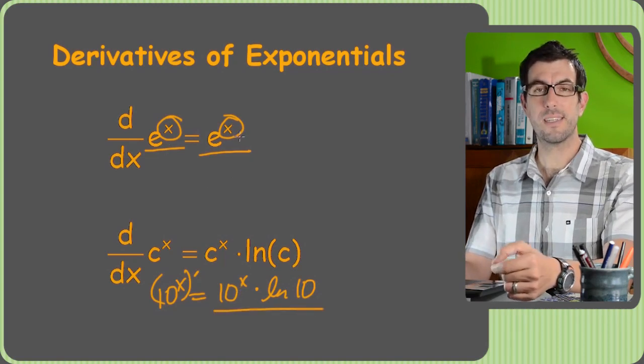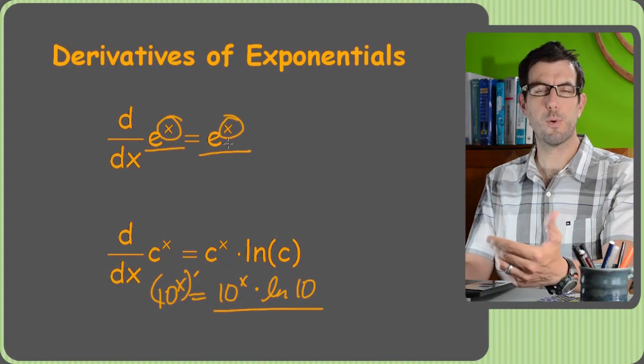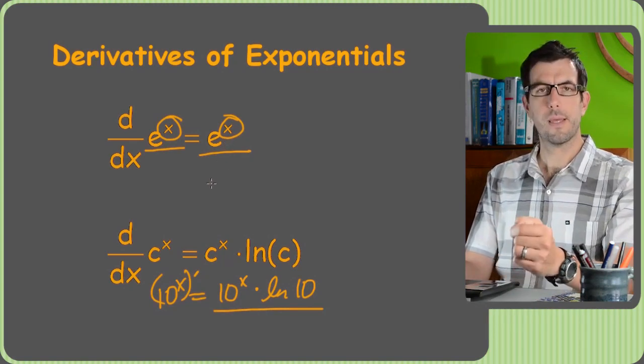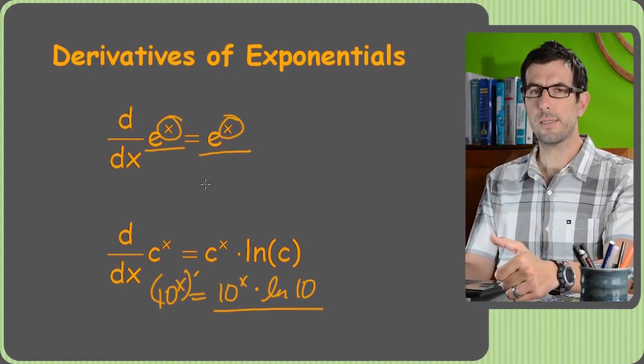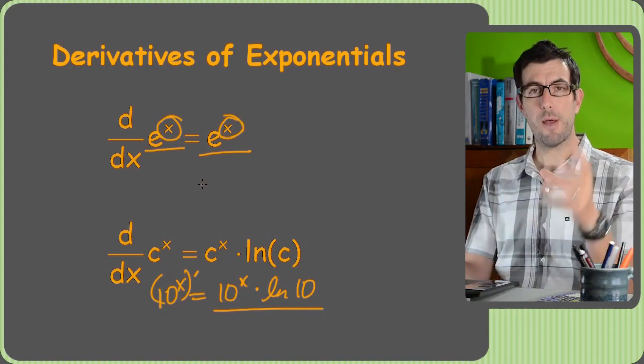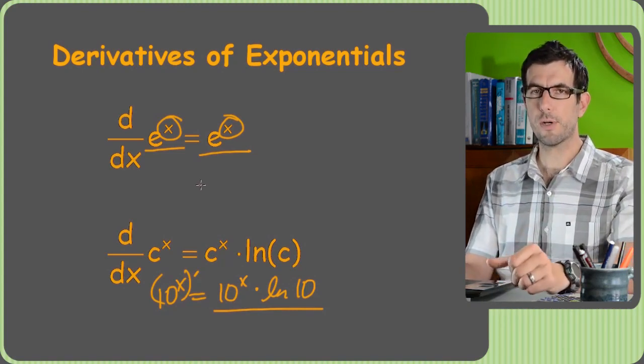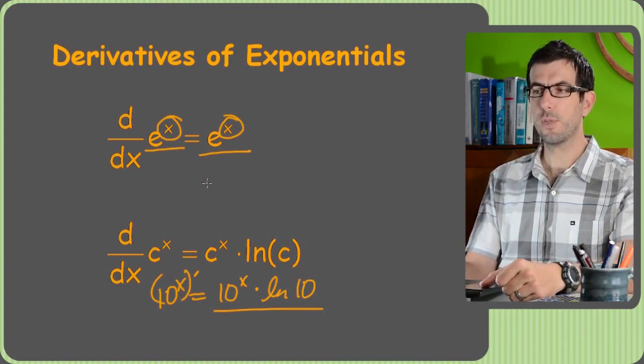It's almost always e to the x, or e to the x squared, or e to the x squared minus 2, or whatever. So this is just introducing the concept, but these will get a lot hairier and we'll have a lot more of them in the chain rule chapter when I go back through all these videos only using the chain rule.